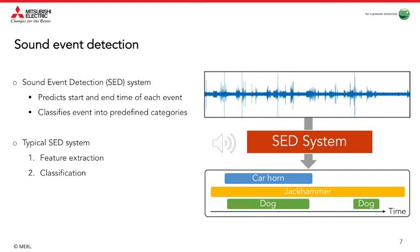In this illustrative example, the SED system receives a time-domain signal, which is a field recording including three different types of sound: car horn, jackhammer, and dog bark. Each colored bar in the system output shows the activity of one sound class over time. Since the SED system makes class activity predictions for each spectrogram frame, we refer to this type of labels as frame-level.